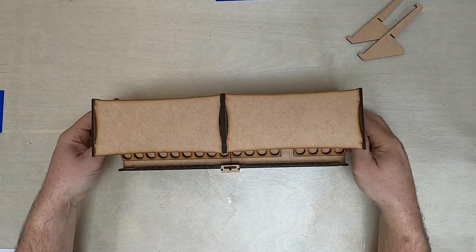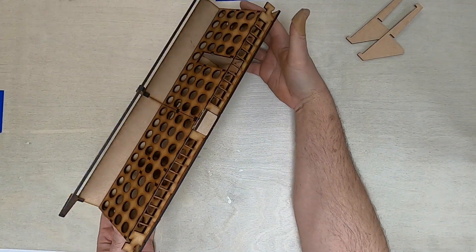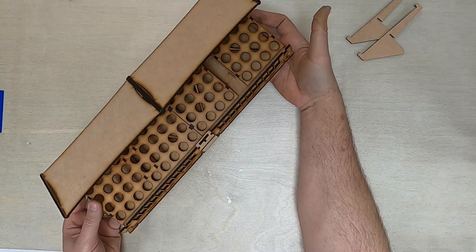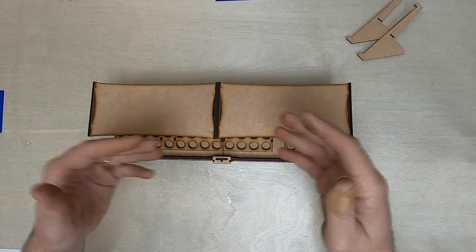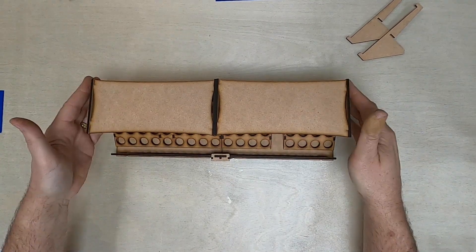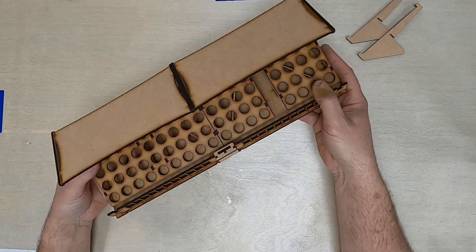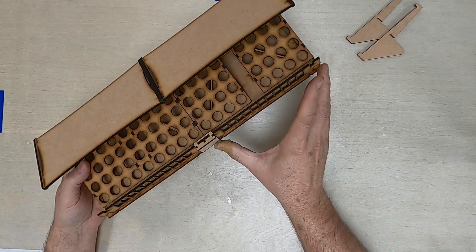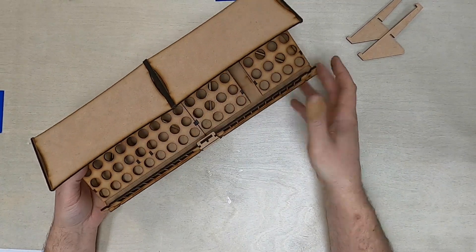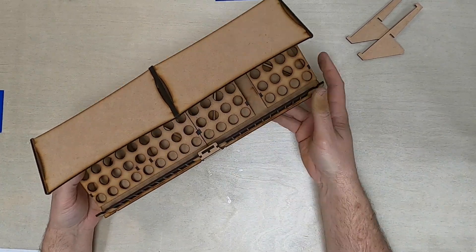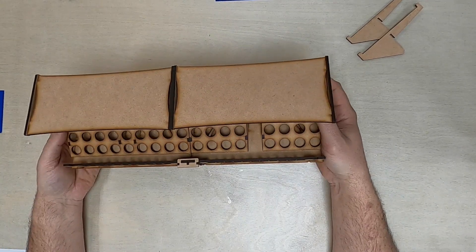And have a long single one. And those can extend out however long you want. Each one of these is 184 millimeters, so it's exactly the same length as a straight track. So when you put a straight track out here, you can put this right next to it and it'll look good.